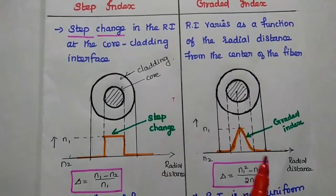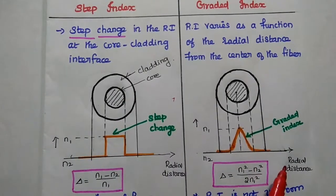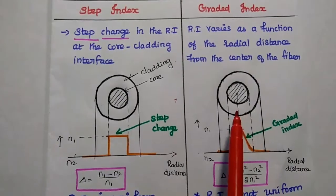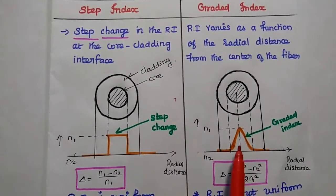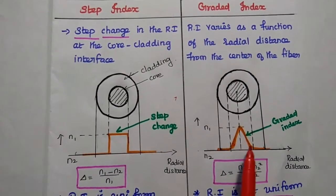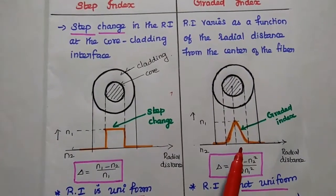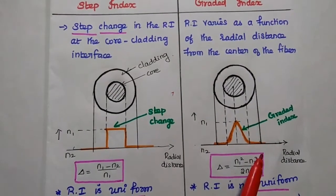But in this graded index, the refractive index varies as a function of the radial distance from the center of the fiber. Here the refractive index is not uniform within this core diameter. It varies smoothly and continuously over the radial distance.